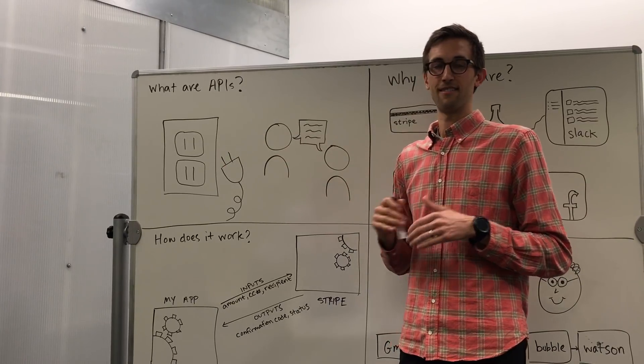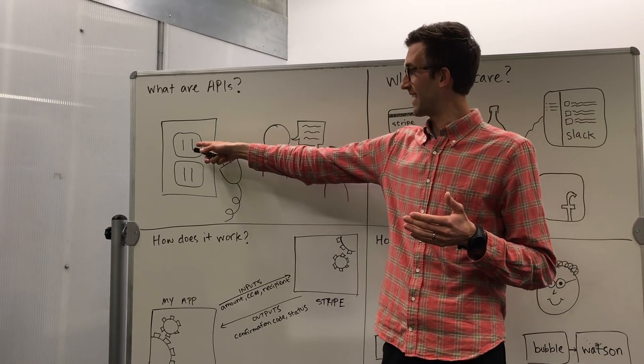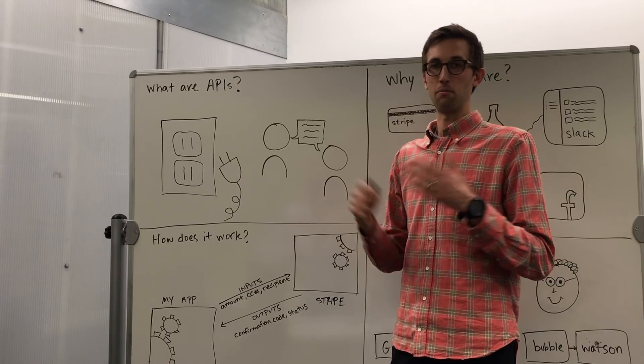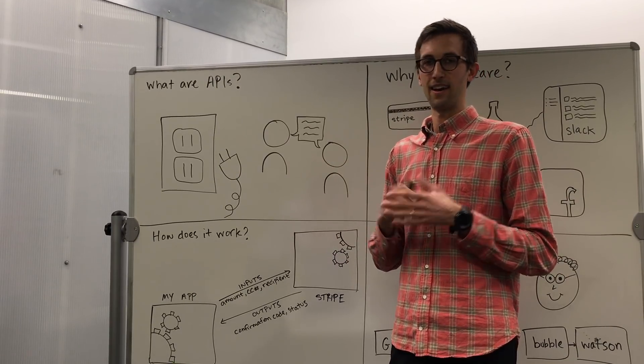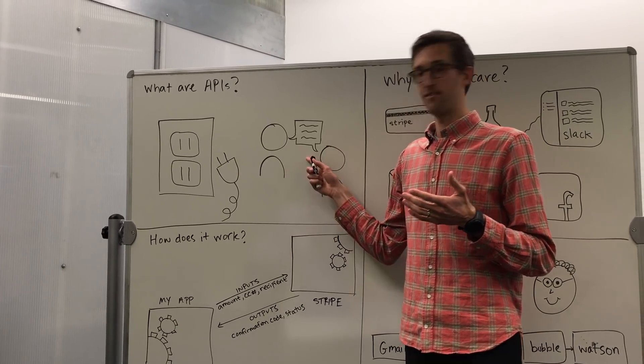So if we look at some other examples of interfaces, a plug and a socket, that's an interface. We've decided what shape these little sockets should be so that you can plug in any new device that you get and get power to it.